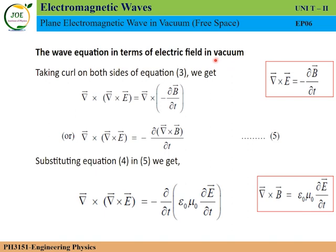The electromagnetic wave will travel in vacuum. The wave equation will be derived — first for the electric field, then for the magnetic field. The third Maxwell equation is del cross E equals minus dou B by dou t, and we will apply the curl operator to this equation.